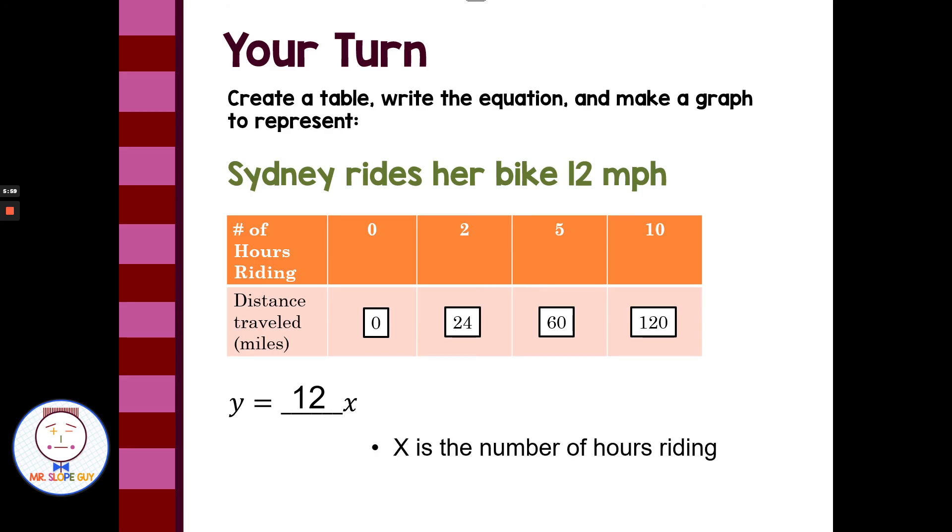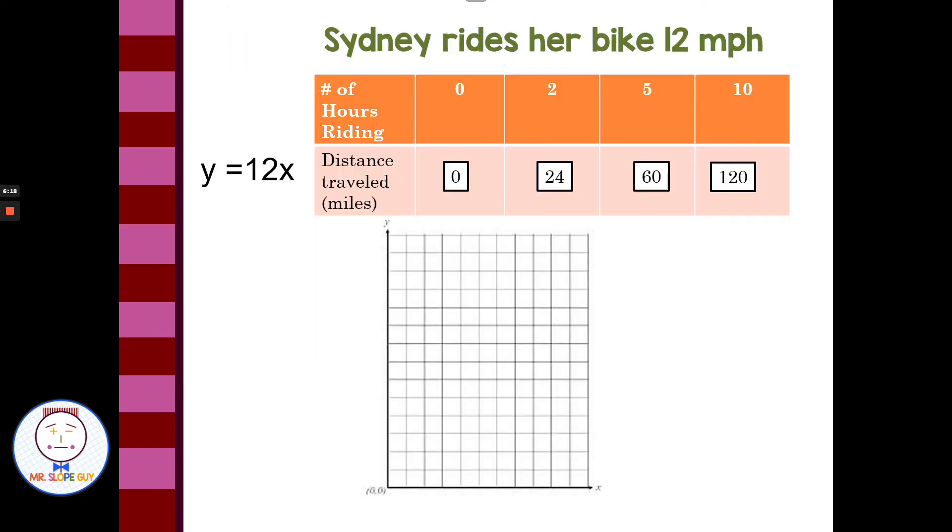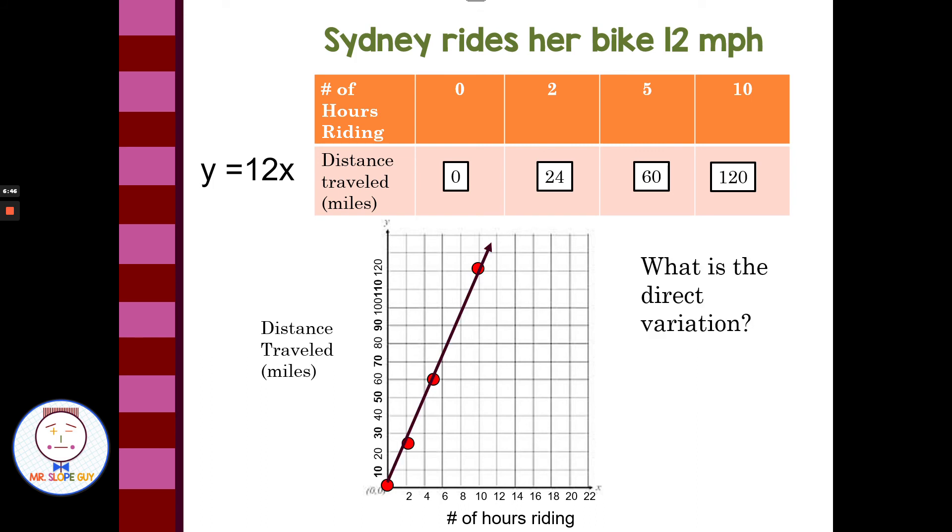If I look at a graph, input-wise, we have x is the number of hours riding the bike, and y is the distance traveled. Each time we have a number of hours, we'd multiply by 12, and then that number coming out for the y value would be the distance traveled in miles. We can make a graph of that. Number of hours riding the bike, distance traveled in miles. Remember, proportional relationships go through the origin at zero, zero. Zero hours would be zero miles traveled. 2 hours at 24 miles, and we're estimating between 20 and 30, about halfway. 5 hours at 60 miles, and 10 hours at 120 miles. What is the direct variation? Well, direct variation is like constant rate of change, or slope, or unit rate. We're still talking about 12.